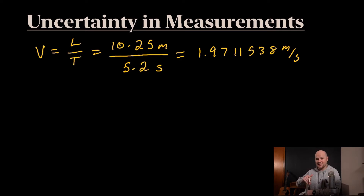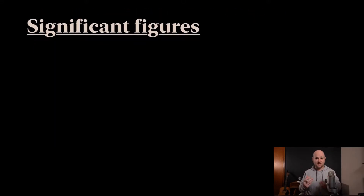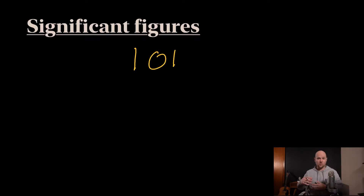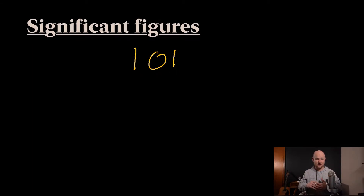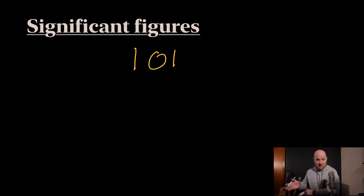This is where the idea of significant figures comes into play. The definition of a significant figure is the number of digits within a number that you can reliably know. So if I had the number 101, the one, the zero, and the other one are all digits within the number. Significant figures is about how many of those digits you can reliably know. A quick rule of thumb for finding how many digits are reliably known is to write numbers in scientific notation.